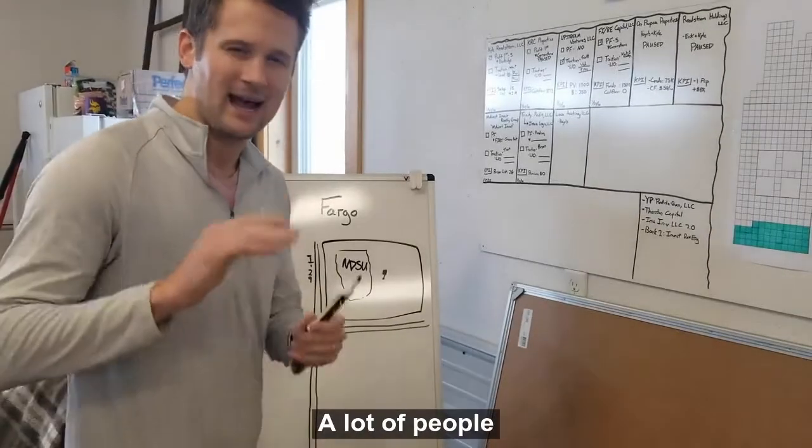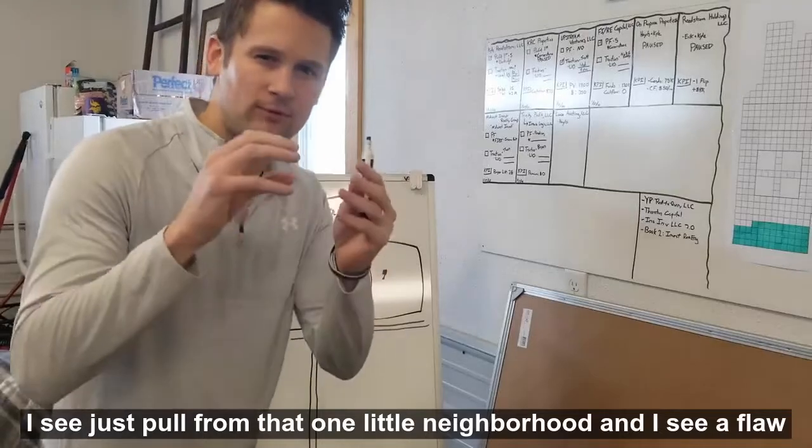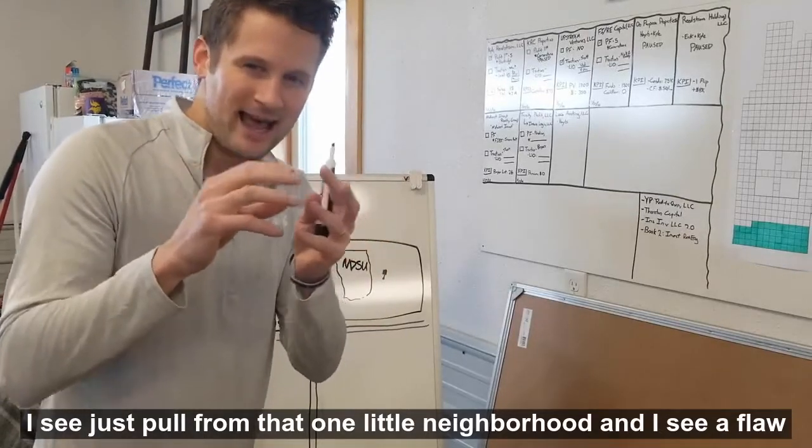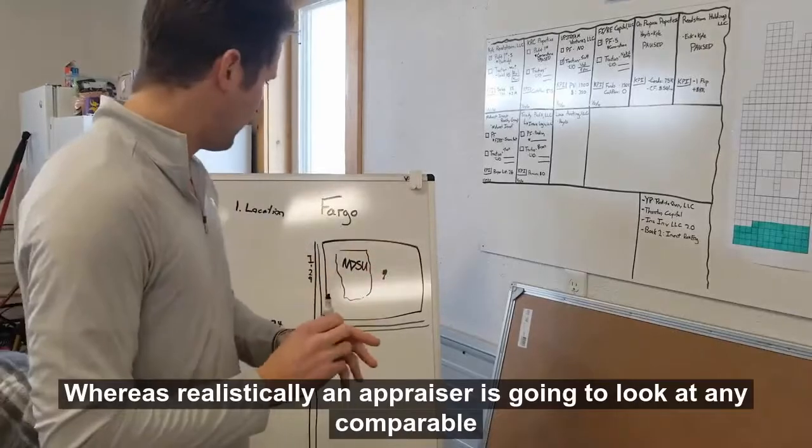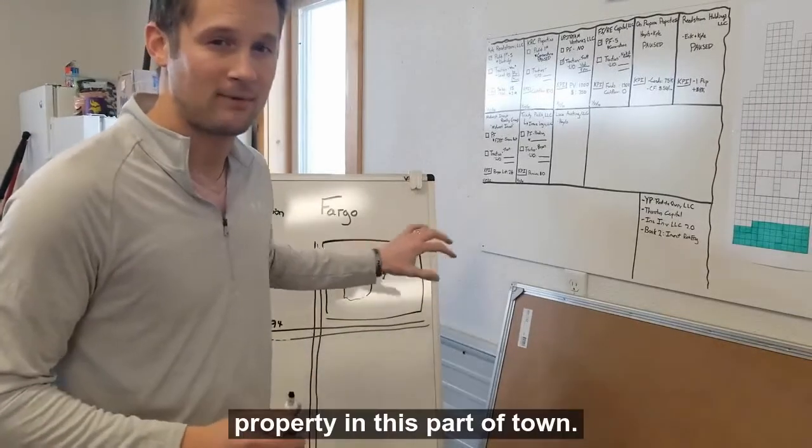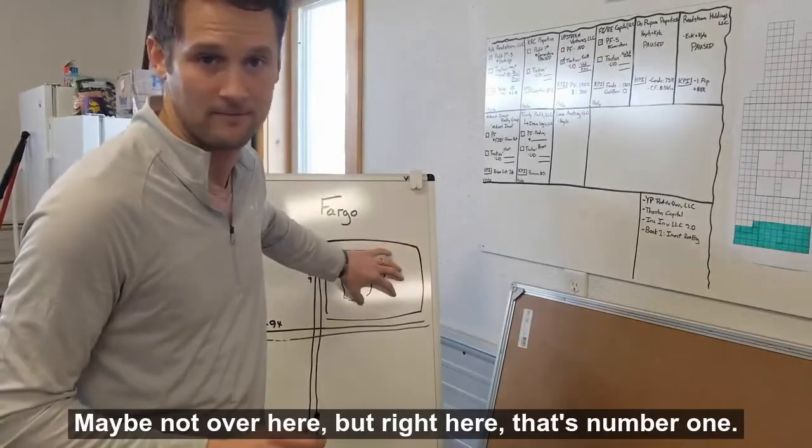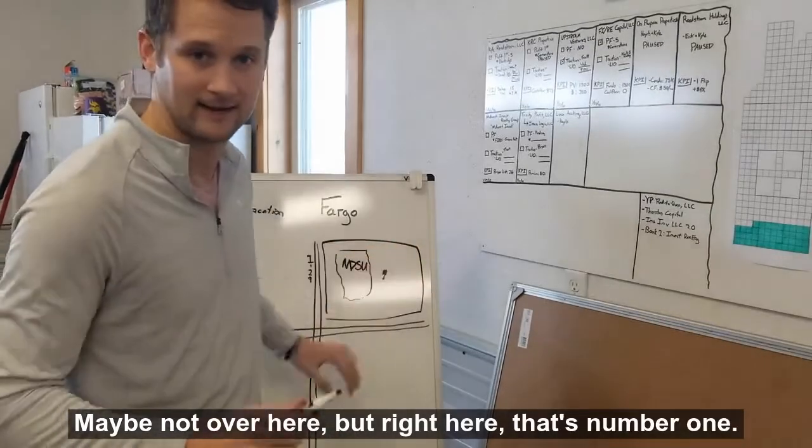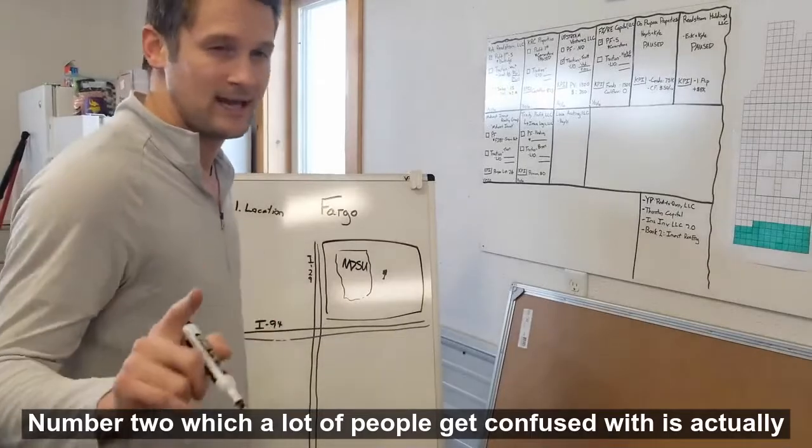A lot of people I see just pull from that one little neighborhood, and I see a flaw in that. You're missing comparables, whereas realistically an appraiser is going to look at any comparable property in this part of town, maybe not over here, but right here. So that's number one.